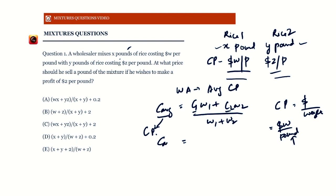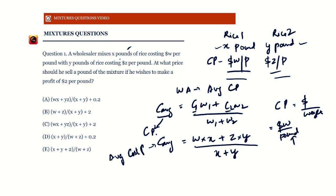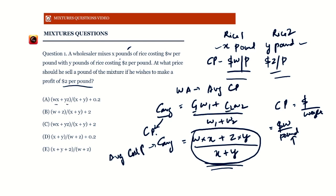So C_average = (w·x + z·y) / (x + y). This is the average cost price of the mixture per pound. If he wants to make a profit of dollar 2 per pound, he should charge this average cost plus another dollar 2 as his selling price. Looking at the options, we have (wx + zy)/(x+y) plus 0.2 — that's not correct.